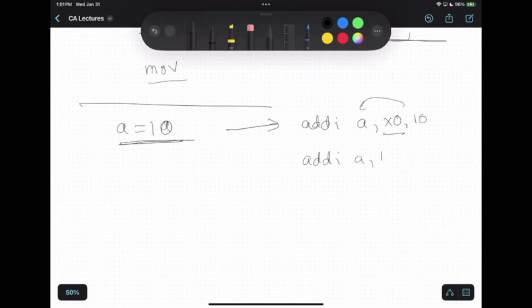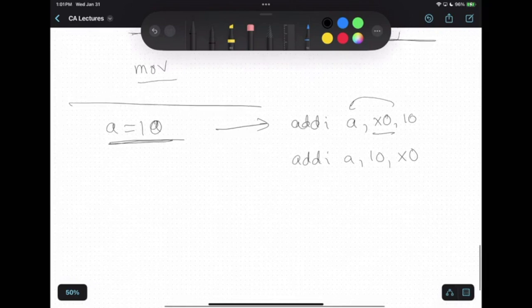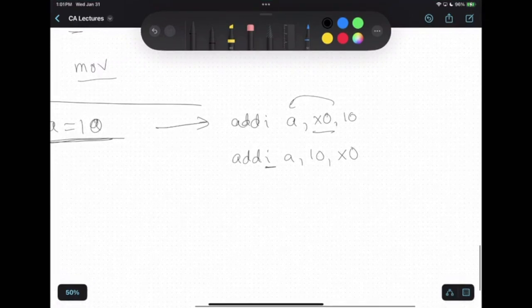Why didn't I write it like addi a, 10, x0? I could have written it like this, couldn't I? With addi, the second addition value can't be a register. The second operand in addi must always be a constant value. It can never be a register. So this is the wrong syntax. That is why the first one is the right way of doing it.